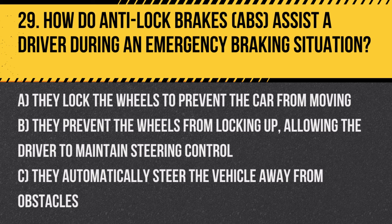Question 29: How do anti-lock brakes (ABS) assist a driver during an emergency braking situation? A. They lock the wheels to prevent the car from moving. B. They prevent the wheels from locking up, allowing the driver to maintain steering control. C. They automatically steer the vehicle away from obstacles. Answer: B. They prevent the wheels from locking up, allowing the driver to maintain steering control. This technology helps maintain vehicle control during sudden stops.